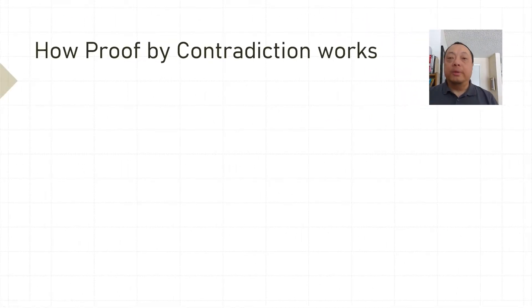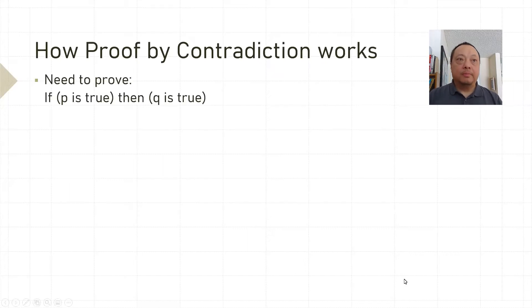First, let me show you how a proof by contradiction works. Suppose we need to prove that if P is true, then Q is true.